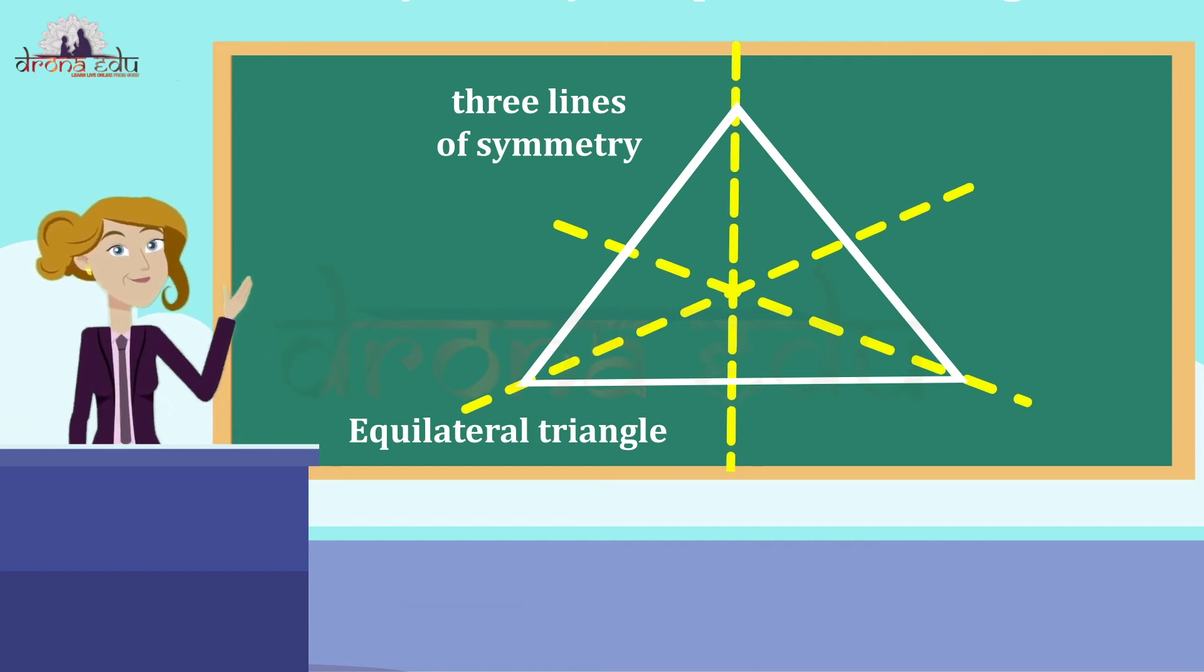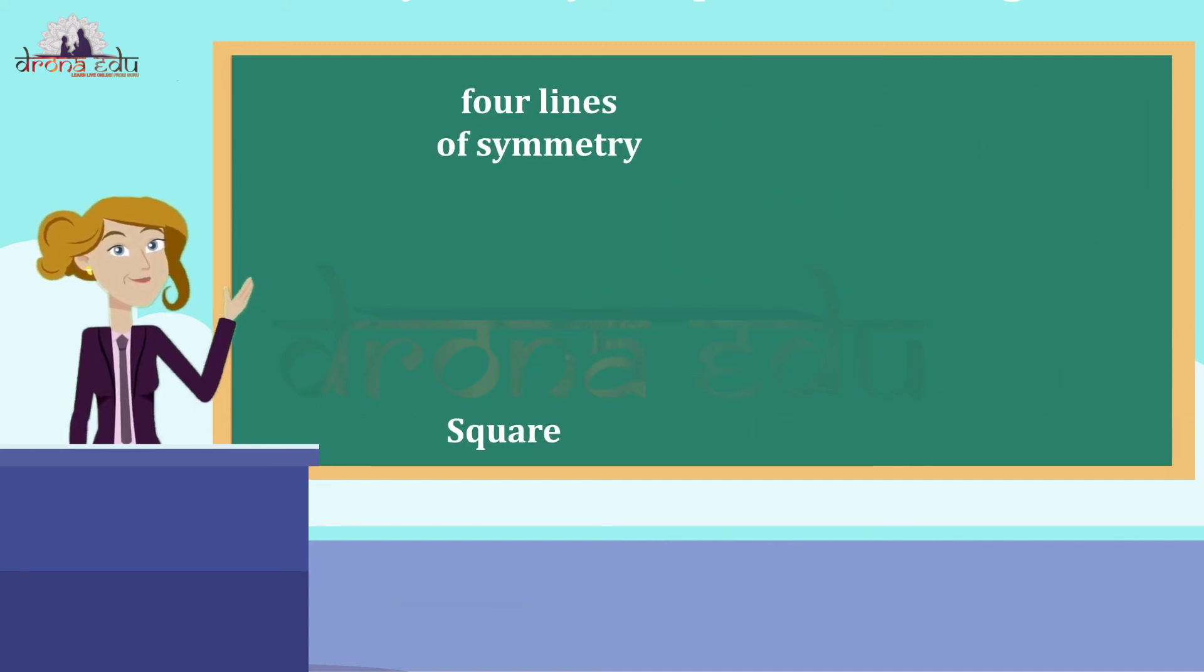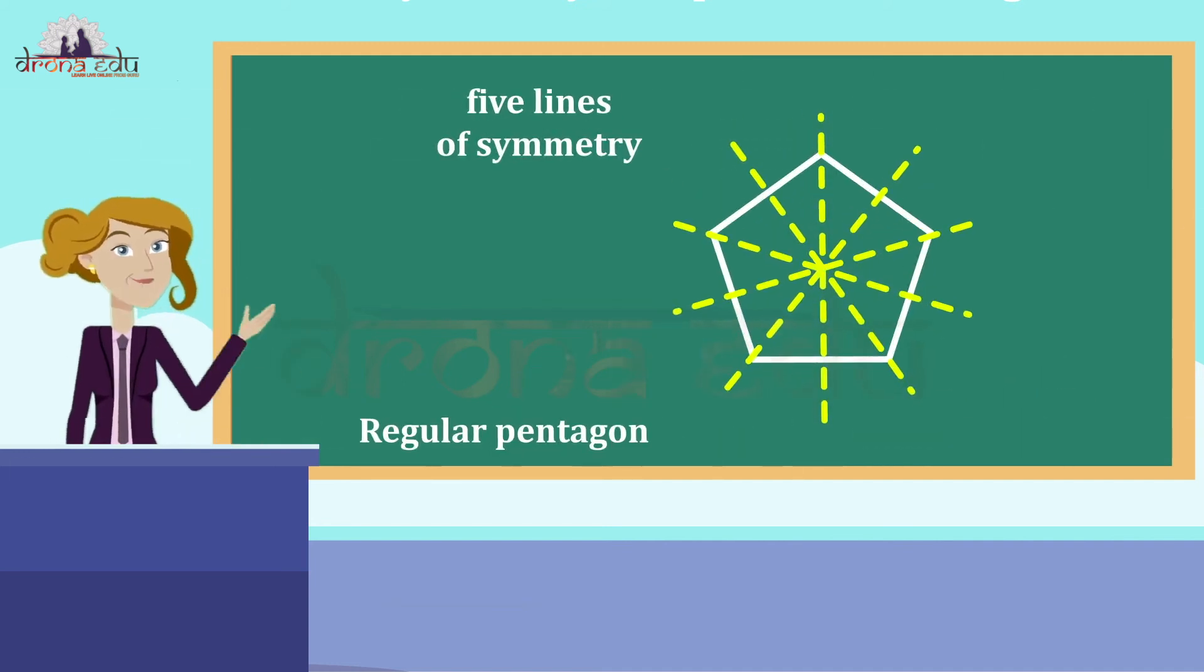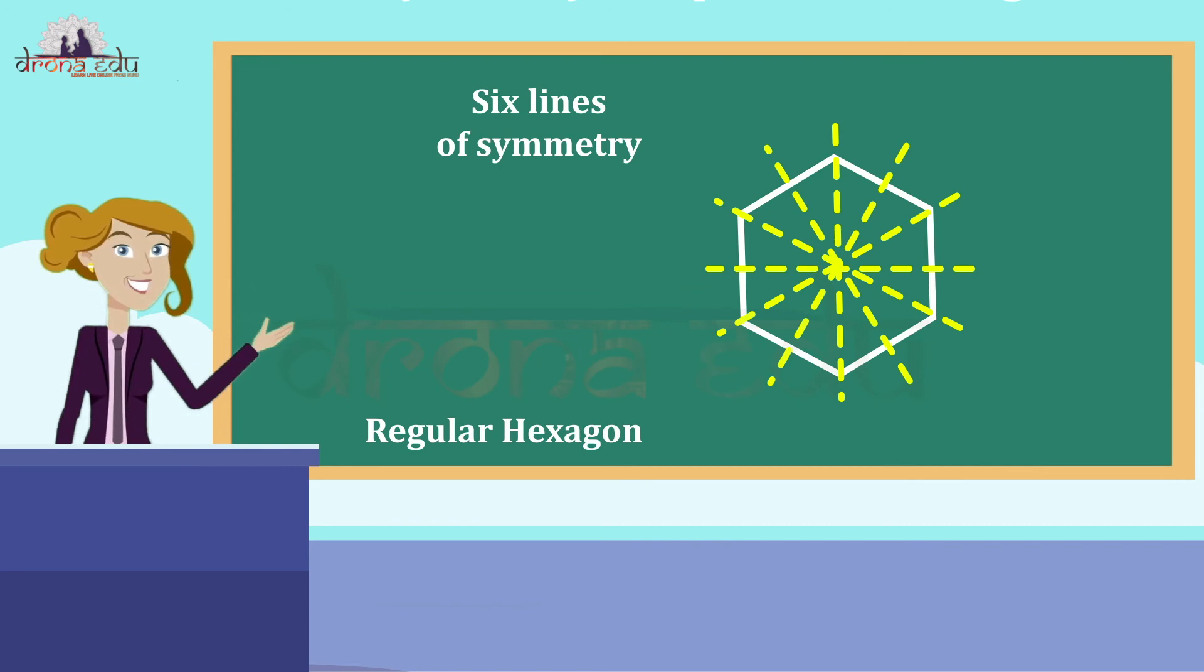Like an equilateral triangle will be having 3 lines of symmetry. A square will be having 4 lines of symmetry. Regular pentagon will be having 5 lines of symmetry. Regular hexagon will be having 6 lines of symmetry.